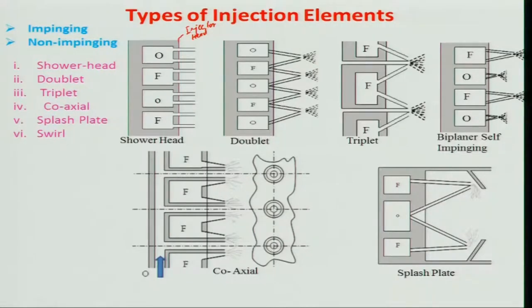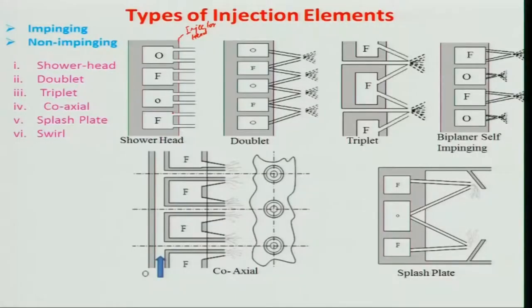One advantage of the shower head is that the heterogeneity of fuel and air is more near the injector head, so the flame or combustion takes place a little away from the injector head. This means the temperature cannot affect the injector head much, and carbon formations and other things that would affect the performance of the atomizer are reduced. However, the penalty is a higher length of combustor. The shower head was used in the V2 rocket engine.